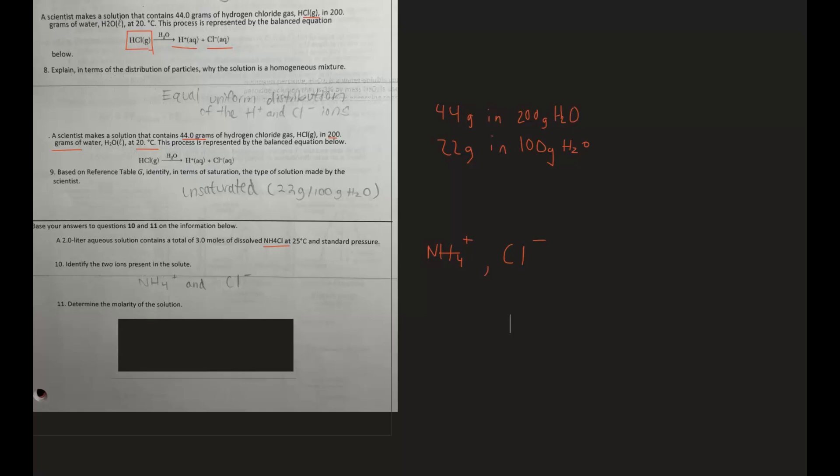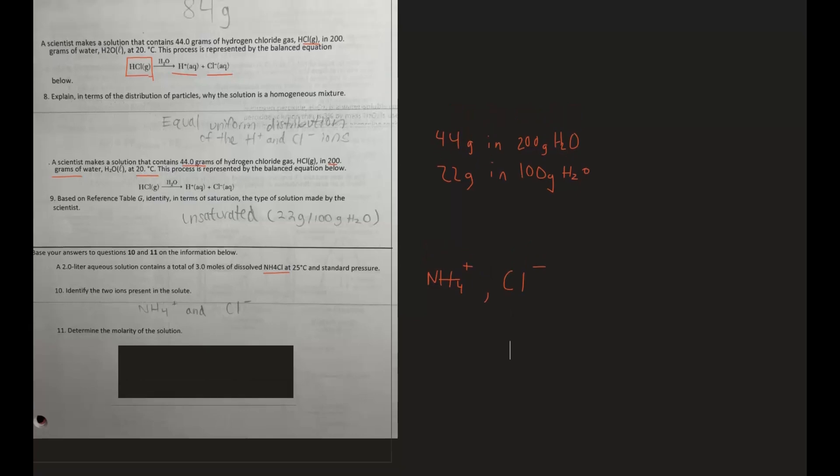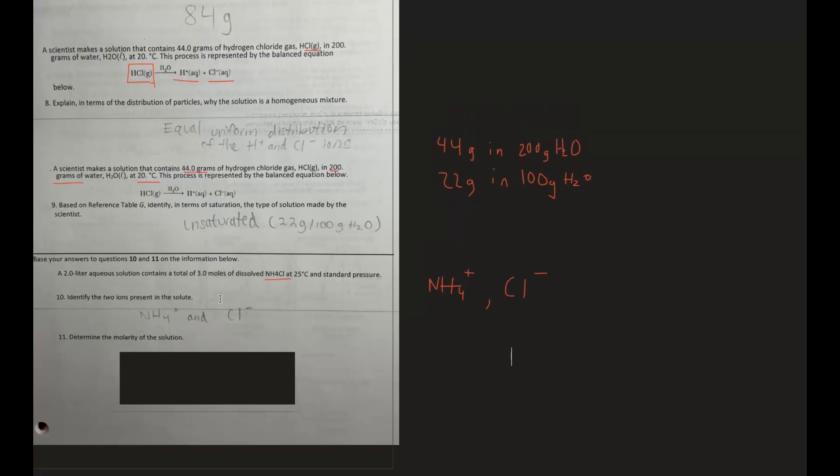Alright, determine the molarity of the solution. So very similar to a question we did up there. Molarity is just moles of solute over liters of solution. And so we can just have the moles of solute, which in our case is three moles, over the liters of solution, which is two liters. So three over two is 1.5.